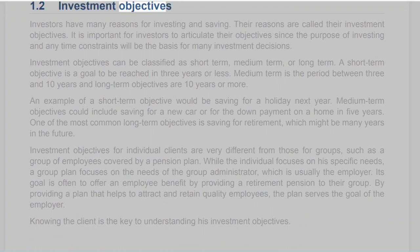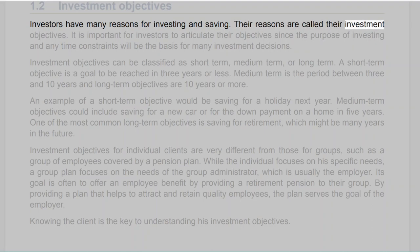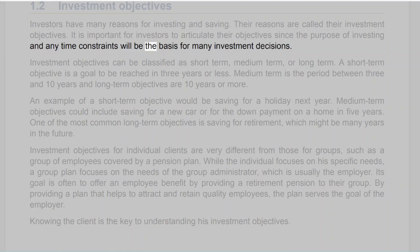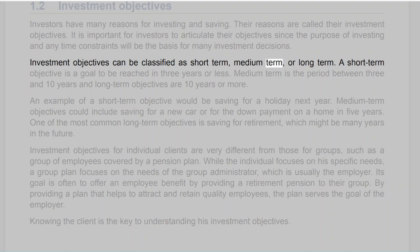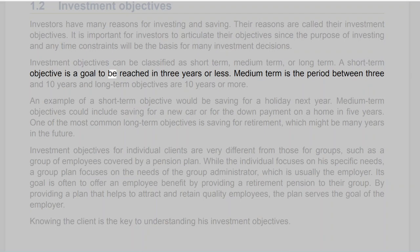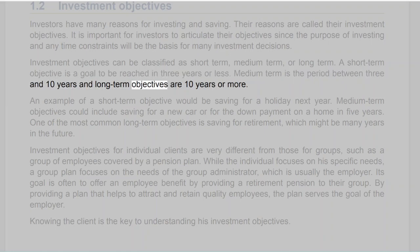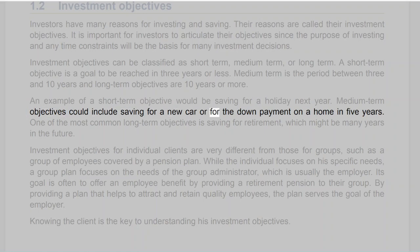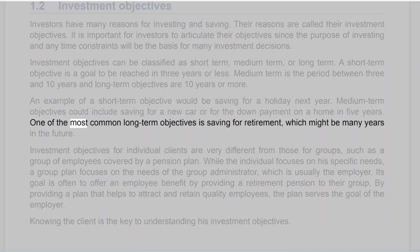Section 1.2: Investment Objectives. Investors have many reasons for investing and saving — their reasons are called their investment objectives. Investment objectives can be classified as short-term (3 years or less), medium-term (3 to 10 years), or long-term (10 years or more). A short-term objective would be saving for a holiday next year; medium-term could include saving for a new car or a down payment on a home in 5 years; and one of the most common long-term objectives is saving for retirement.